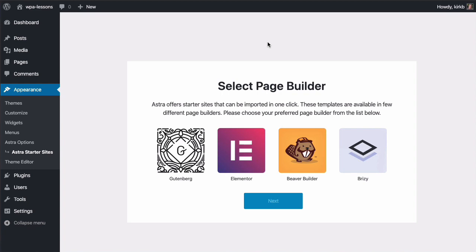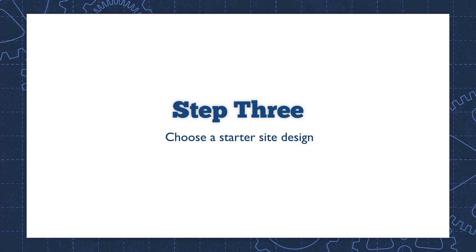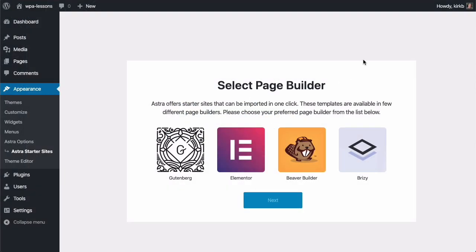After installing and activating the plugin, we're straight into step three: choosing a starter site design. This plugin gives us access to a bunch of really nice designs that use tools like Elementor, Beaver Builder, or Gutenberg. We're going to use Elementor today, and I don't even need the commercial version — I didn't even need to install Elementor beforehand. The Astra Starter Sites plugin will install all the tools and dependencies we need. First, we tell the plugin which page builder we're using — select Elementor and click Next.